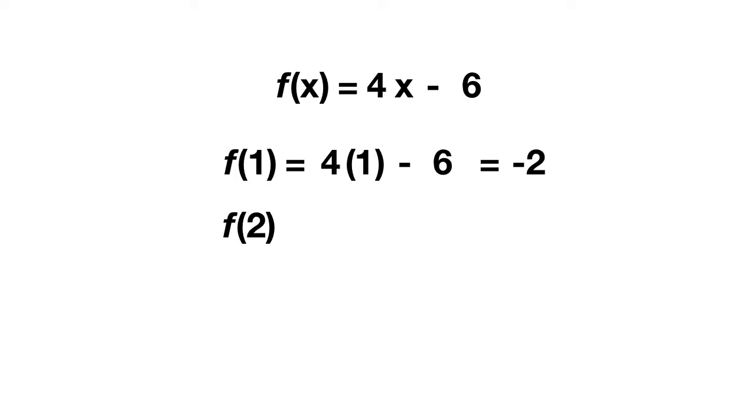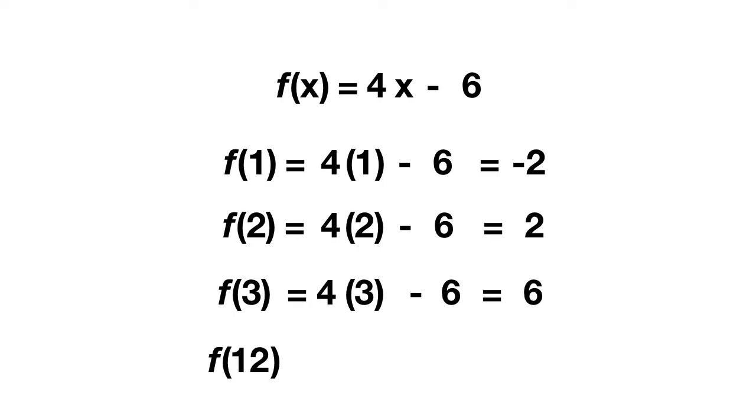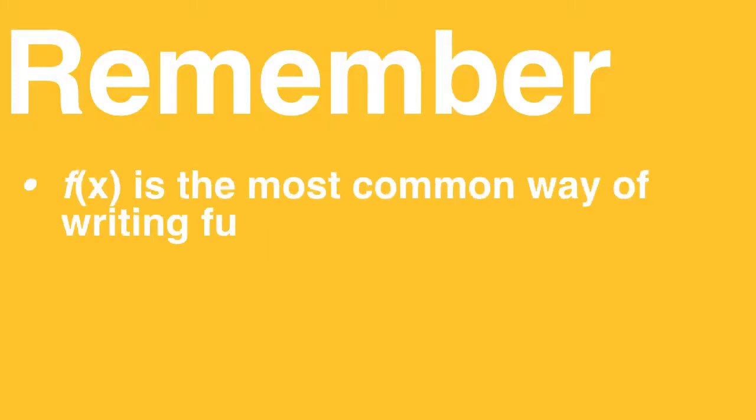Solve for f of two. Well this will equal four times two minus six. Four times two is eight, minus six equals positive two. So from today, remember f of x is the most common way of writing functions, and this f of x is pronounced as f of x.